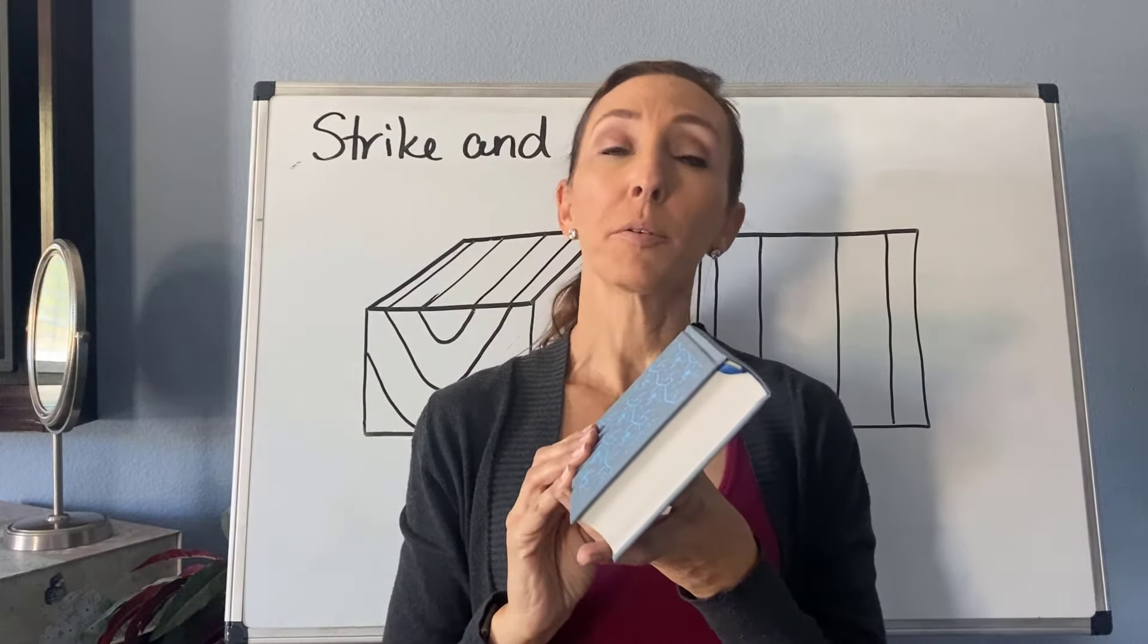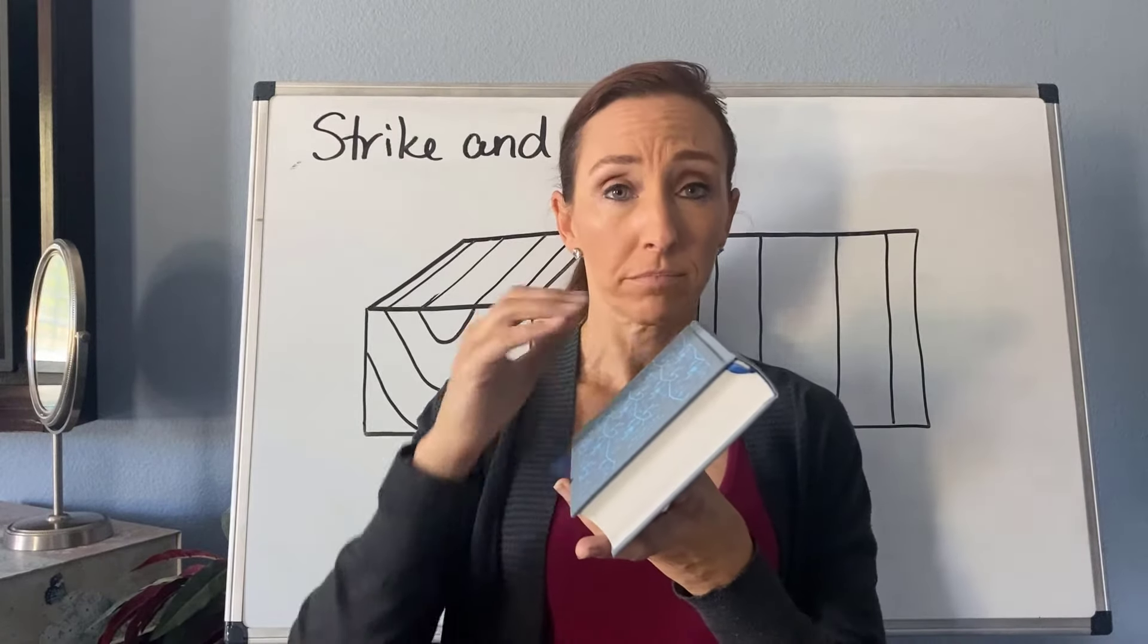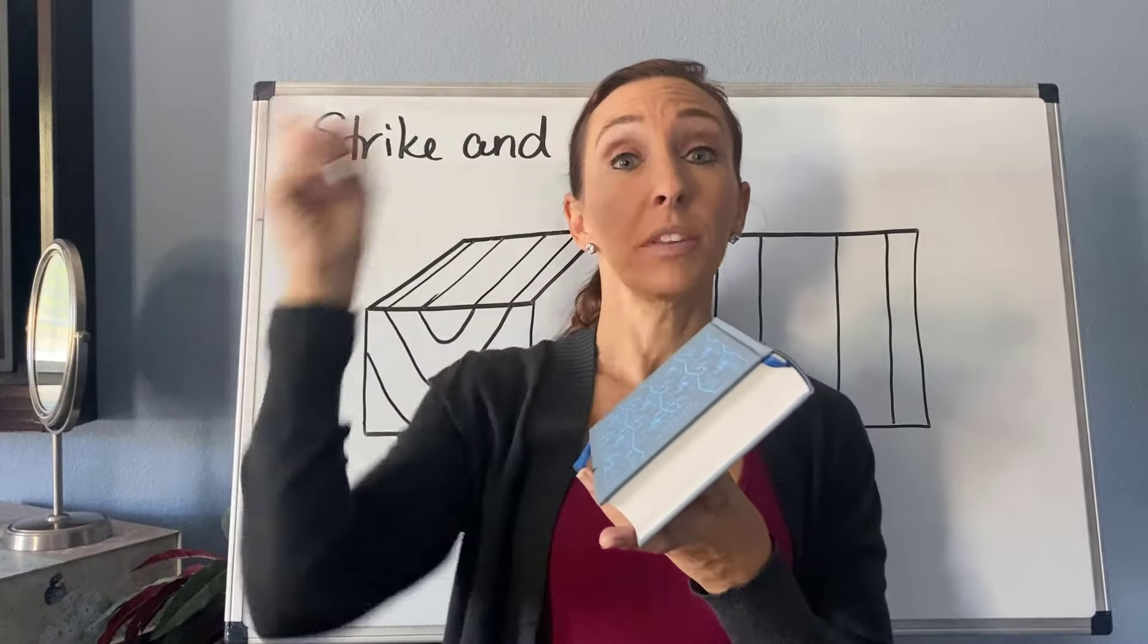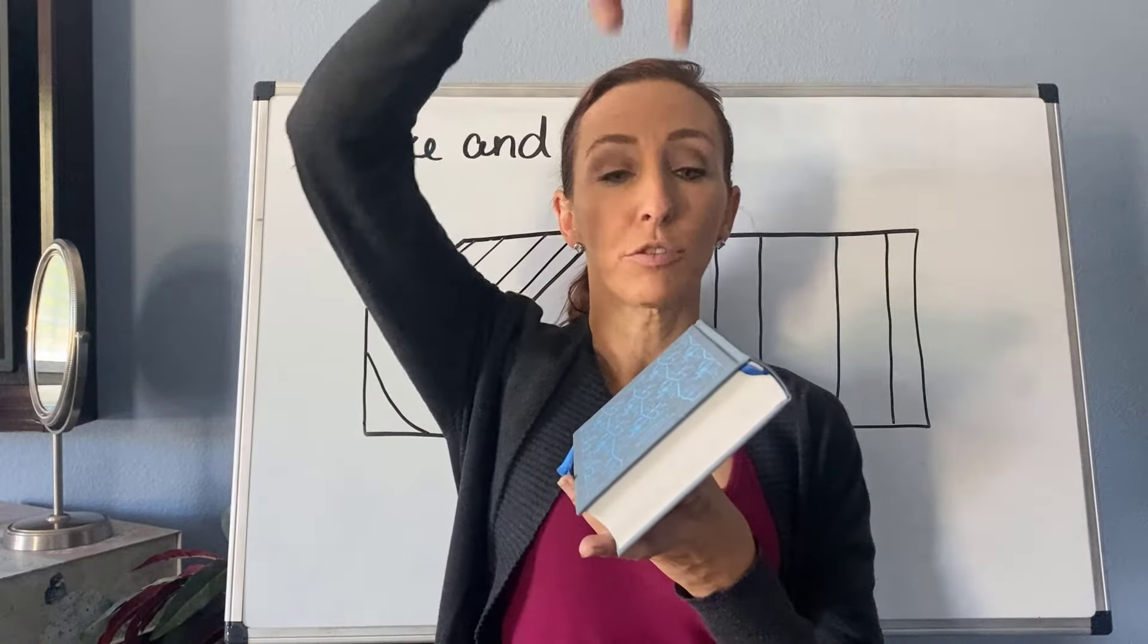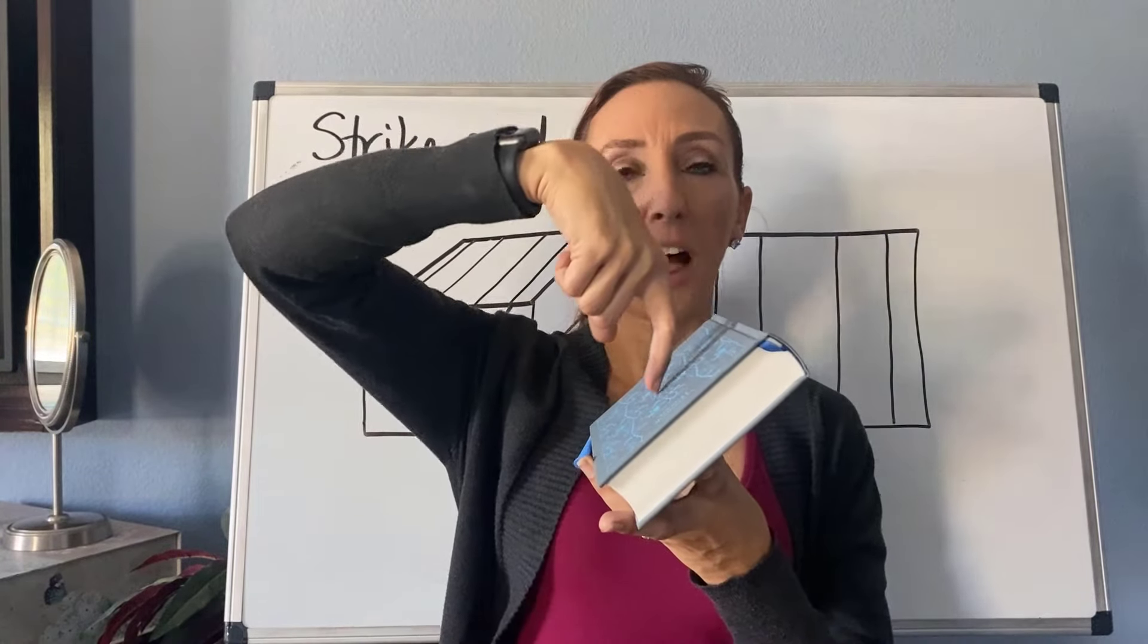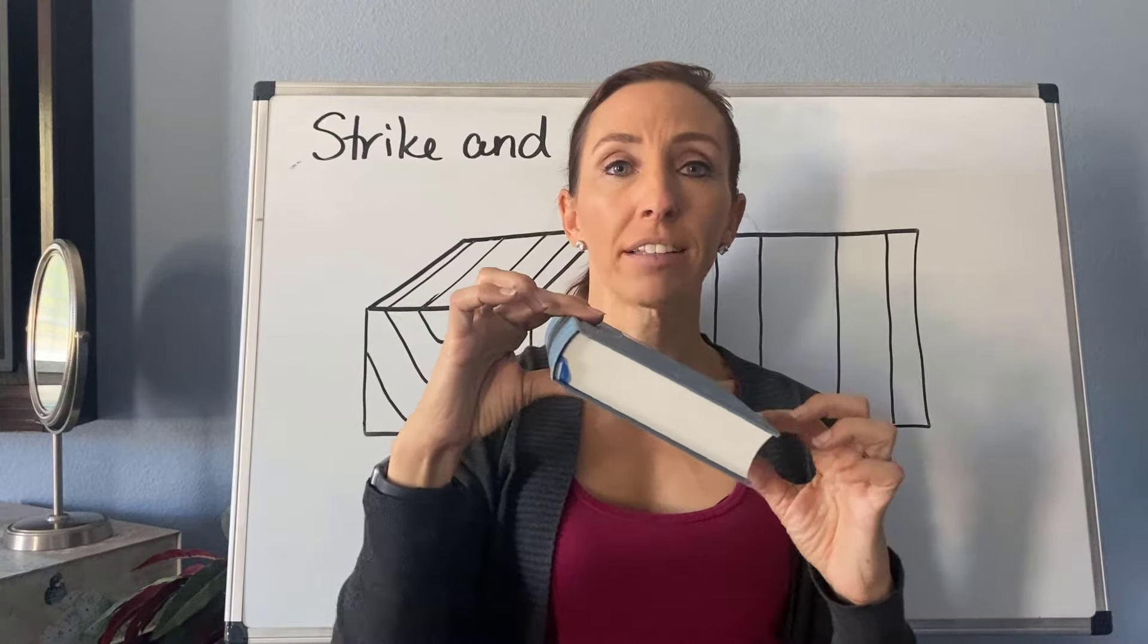Now, when we talk about dip, we want to talk about two things, the direction it's dipping and then the amount. So in this case here, it's dipping off to the east. So if I were to place a drop of water on my surface here, my sedimentary bed, it would roll off toward the east. So that's an east dip. If it was tipped this way, it would be to the west.